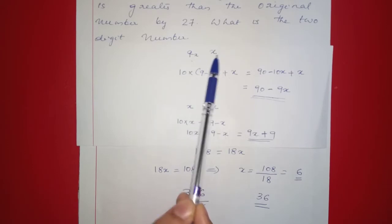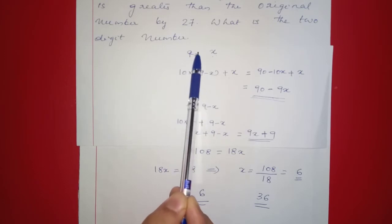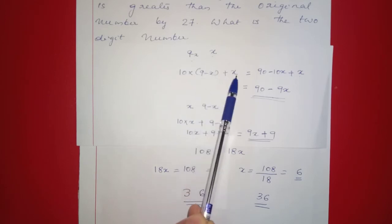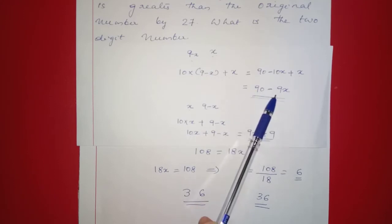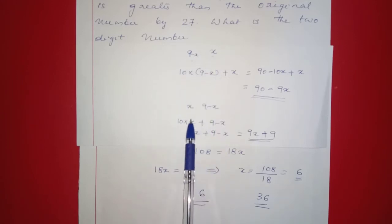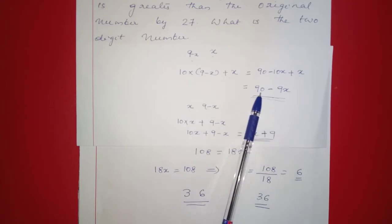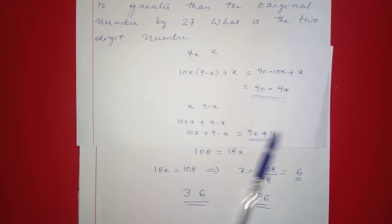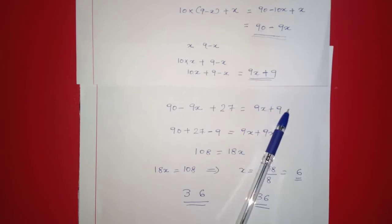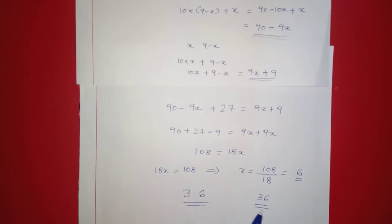We verify: the original number is 90 minus 9x. With x equal to 6, the unit digit is x equals 6 and the tens digit is 9 minus x equals 3, confirming the original number is 36. The sum of digits is 3 plus 6 equals 9, and interchanging gives 63, which is 36 plus 27. Correct.